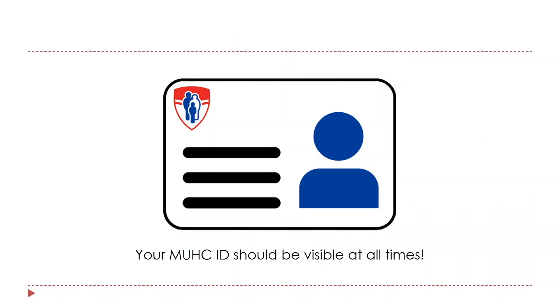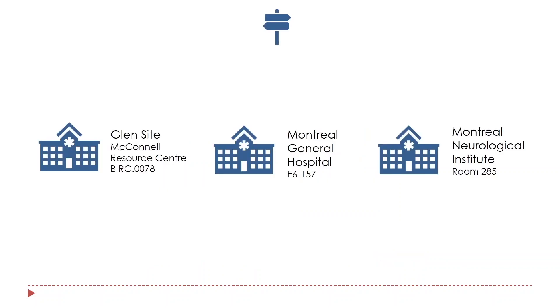For the Medical Library on all sites, your MUHC ID should be visible at all times. We have libraries on three sites: the Glenn site, the Montreal General Hospital, and the Montreal Neurological Institute.